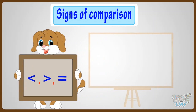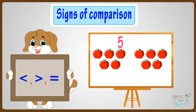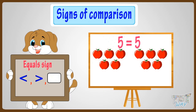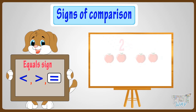When two numbers are equal, we use the equal sign like this. Five equals five. Two equals two.